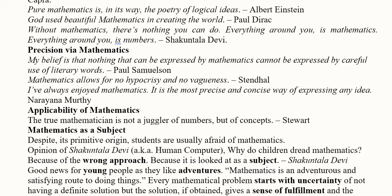Precision is something we can get from mathematics. A famous economist believed that mathematics is equally good compared to literary words. The usual way of studying economics uses text, words, and sometimes diagrams, but mathematics is equally effective — or even more effective — as per Paul Samuelson. There is no vagueness in mathematics; it is just clarity. Those who can understand mathematics can really enjoy it, as it is a precise and concise way of expressing various ideas.